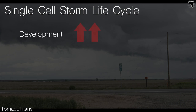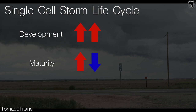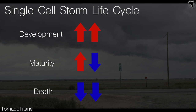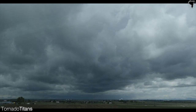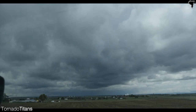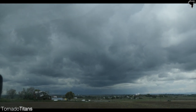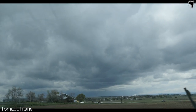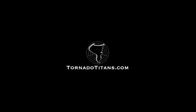Development, when the updraft is dominant. Maturity, where the updraft and downdraft are relatively equal strength. And death, where the downdraft becomes dominant and the storm rains itself out. Severe weather is most likely to occur in either maturity or as the storm dies with strong downburst winds.